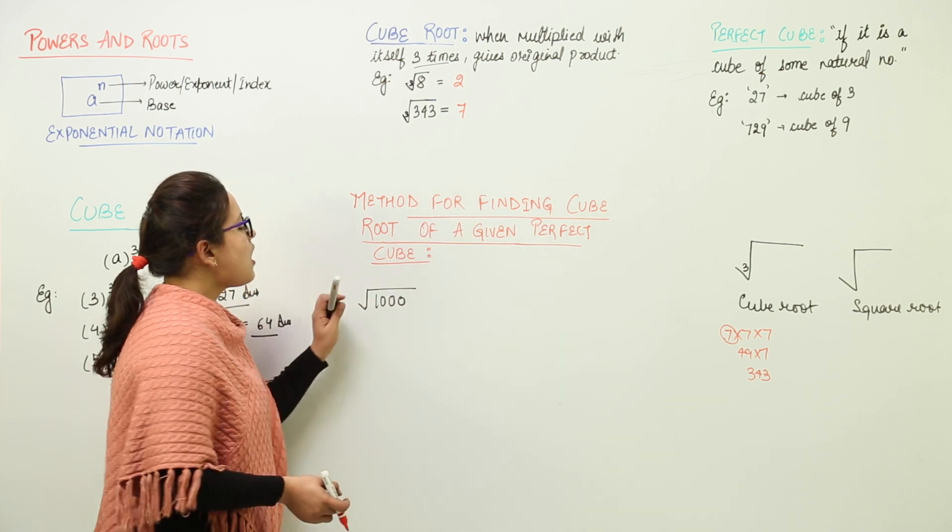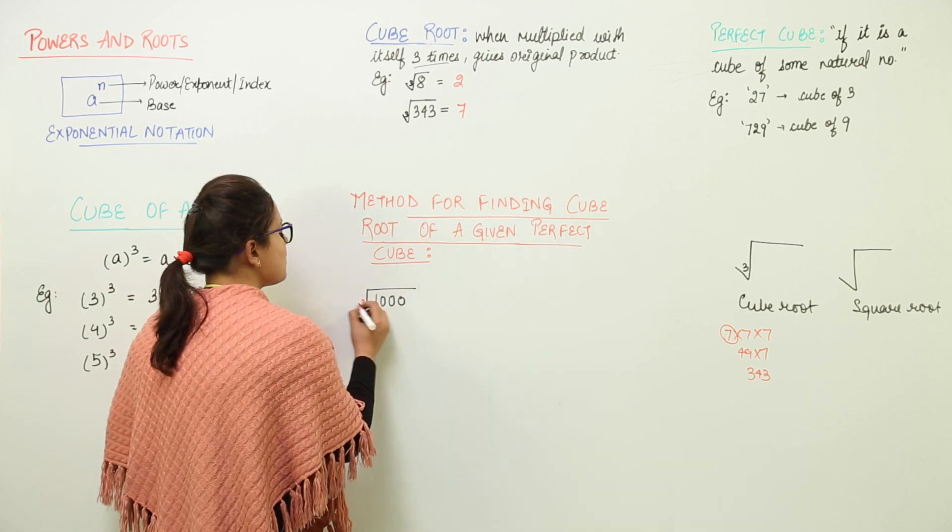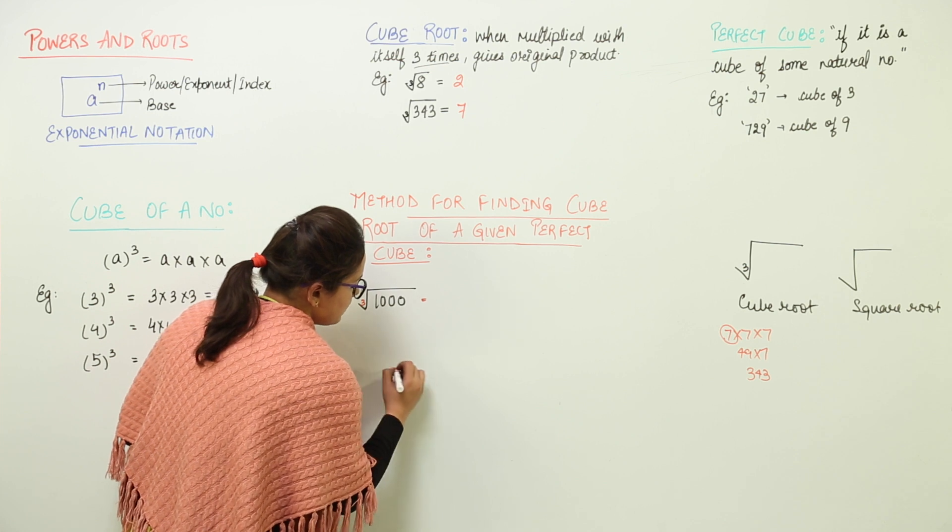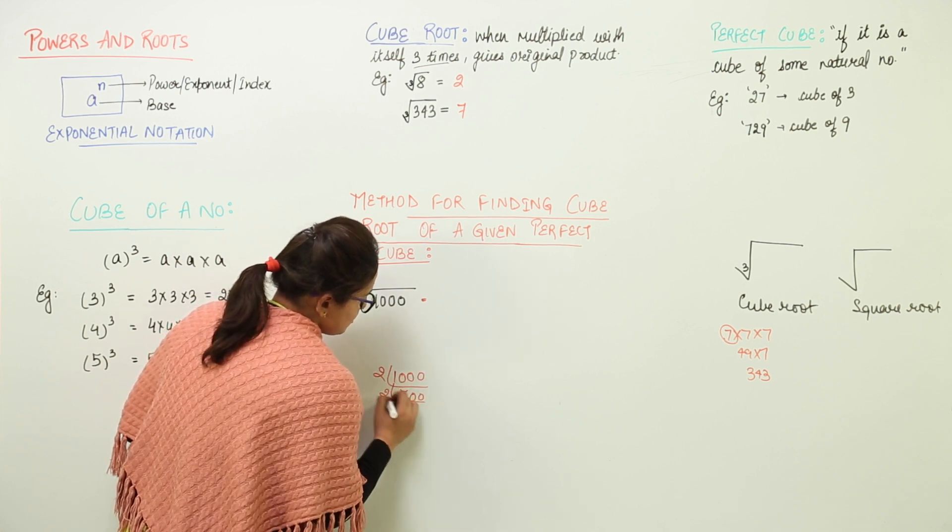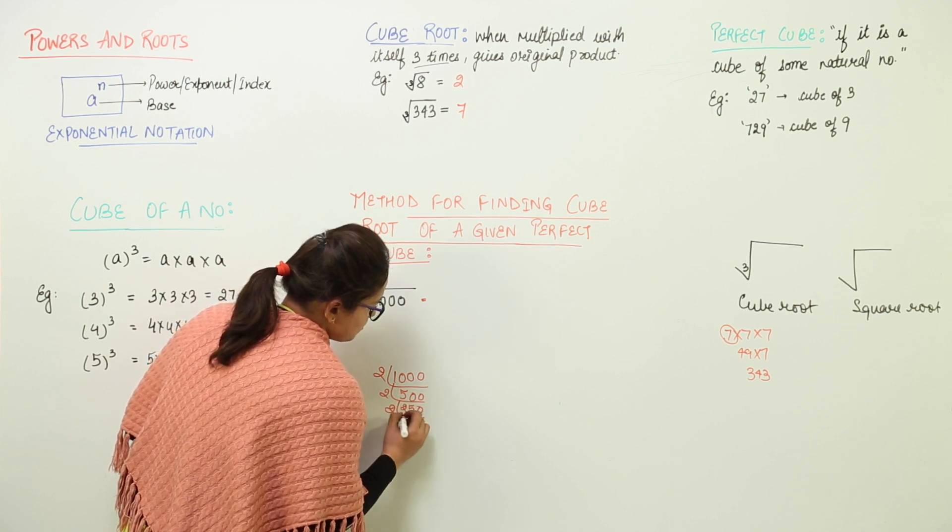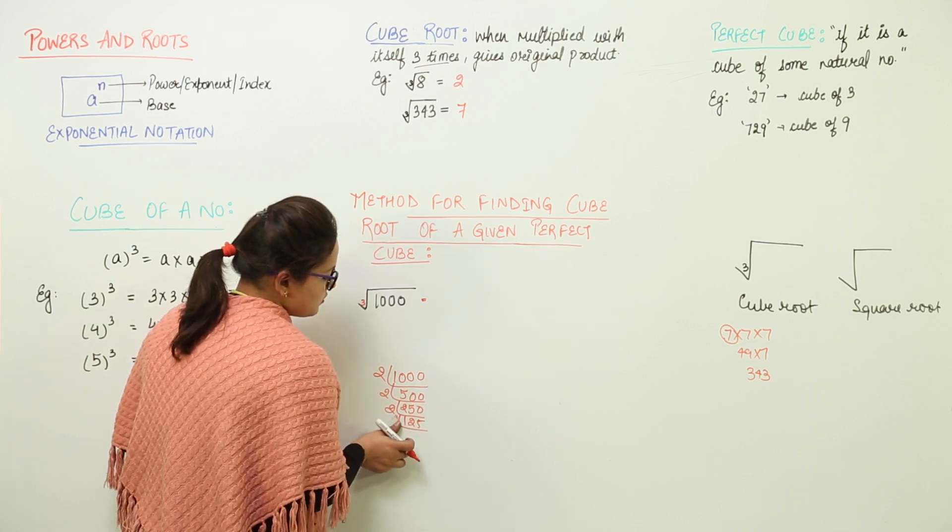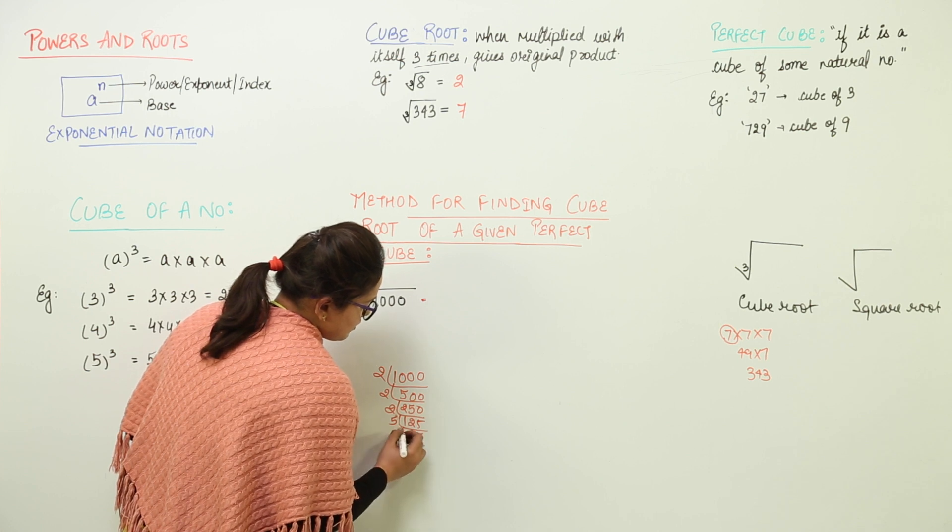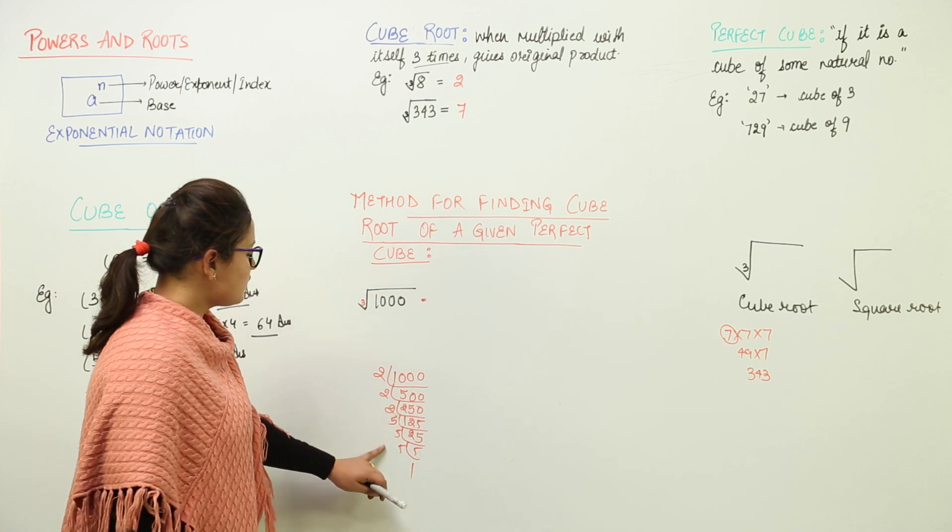Now how to find the cube roots of a given number? Now to find cube root of this number, what we are going to do? We are going to factorize it the same way. 2 times 5 is 10, 0, 0, 2, 2 times 50, 2 times 25. Now this is not going with 2 so we are going to do it with 5 now. 5 times 2 is 10, 5 times 5 is 25, 5 times 5 is 25 and 5 times 1 is 5. Now we have got the factors.